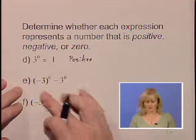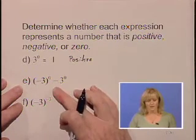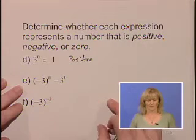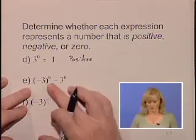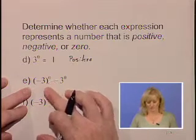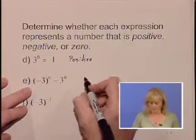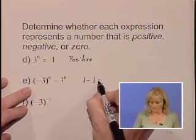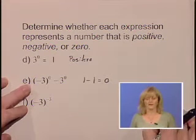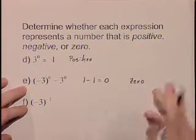Part E. Quantity negative 3 raised to the zero power minus 3 raised to the zero power. We'll do each term separately. Again, noting that the definition of having 0 as an exponent, each piece will simplify to the value of 1. So we'll have 1 minus 1 for a value of 0. So we'll label that 0.